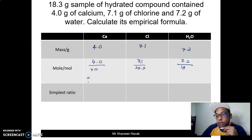So this one you will get 0.1, 7.1 bahagi 35.5 you will get 0.2, dan 7.2 divided by 18 you will get 0.4.